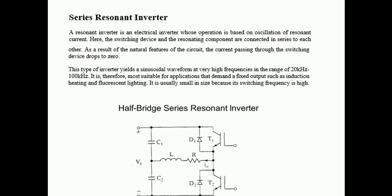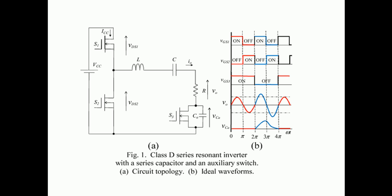This is the half-bridge series resonant inverter. There is another series resonant inverter circuit here with three switches. This is the topology of the three switches S1, S2, and S3.